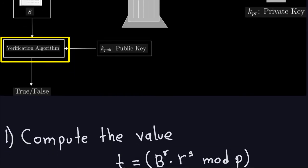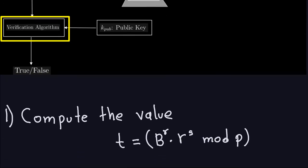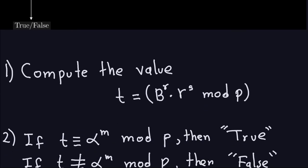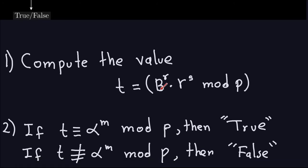Let's look at what is the actual process of the verification algorithm for the Elgamal. The first thing we're going to do is compute this value. We take B to the R times R to the S modulo P. This B is part of the public key, R was part of the signature, and S was also part of that signature. And P is the public modulus.